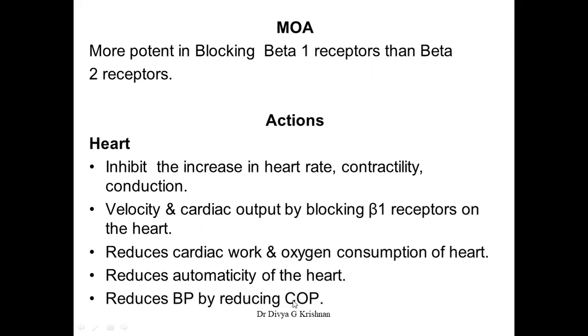They do not have significant action on blood vessels because beta-2 receptors are present on the blood vessels. Hence they are not causing vasodilatation blockade like the non-selective beta blockers. They block the beta-1 receptors, bringing about a fall in cardiac output and thereby decreasing blood pressure. Right from the beginning itself you will see a fall in BP with the use of cardioselective beta blockers.